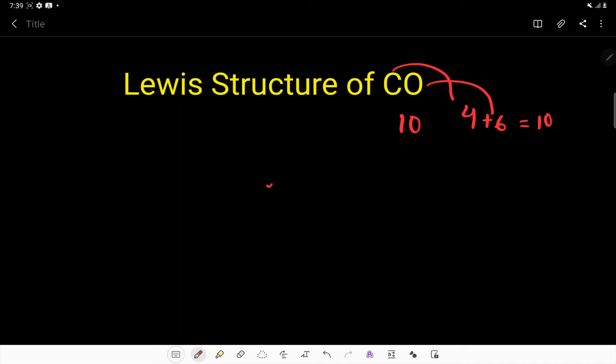the central atom. Here, the central atom is carbon because it is less electronegative than oxygen. So we'll write carbon and oxygen side by side. At first we'll link these two atoms by a line. Every line indicates